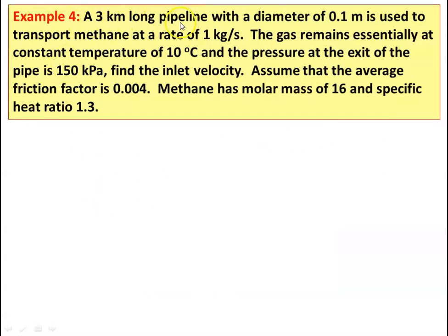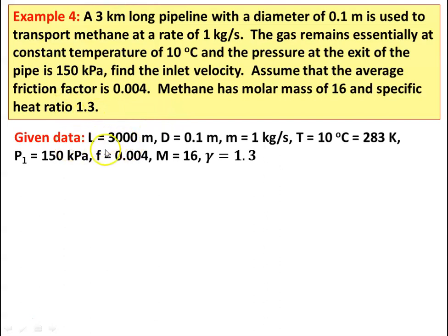Example number 4: a 3 kilometer long pipeline with a diameter of 0.1 meter is used to transport methane at a rate of 1 kilogram per second. The gas remains essentially at constant temperature of 10 degree Celsius and the pressure at the exit of the pipe is 150 kilo Pascal. Find the inlet velocity. Friction factor is 0.004, methane has molar mass of 16 and specific heat ratio of 1.3. Given: length = 3000 m, diameter = 0.1 m, ṁ = 1 kg/s, T = 283 K, P2 = 150 kPa, F = 0.004, M = 16, γ = 1.3.